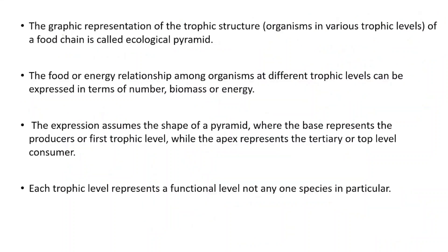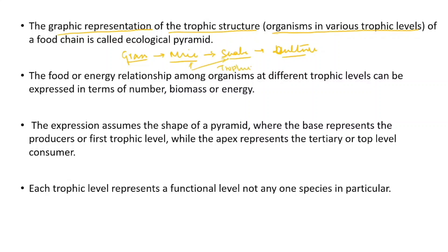The graphic representation of the trophic structure — trophic structure means each of the organisms that participate at various trophic levels. What is a trophic level? Say grass eaten up by mice, eaten up by snake, eaten up by vulture — each of these organisms we call trophic levels. So the graphical representation of organisms in various levels of a food chain is called an ecological pyramid.